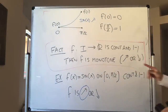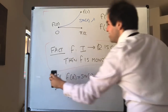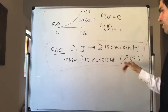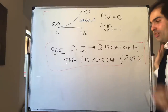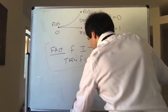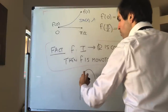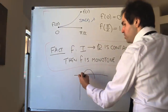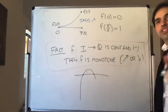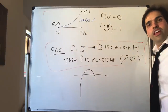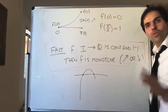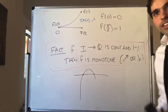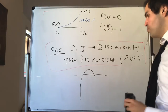This theorem sounds amazing, but hopefully it's more or less obvious. Suppose the function is not increasing or decreasing — then, for instance, the function may go up and then go down. But then it cannot be one-to-one, because you'd have two inputs giving the same output. Therefore, if f is continuous and one-to-one, this cannot happen, so it has to be increasing or decreasing. And now, without further ado, let's prove this fact.